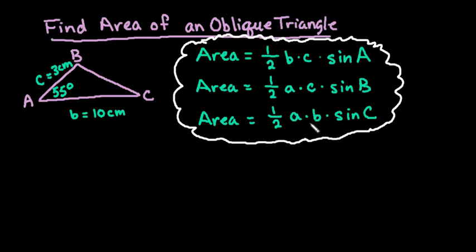If you have a right triangle and you know the two legs, then you can find the area by doing one-half base times height. But in this triangle it is oblique, even if it looks like this is a right angle, it is not.